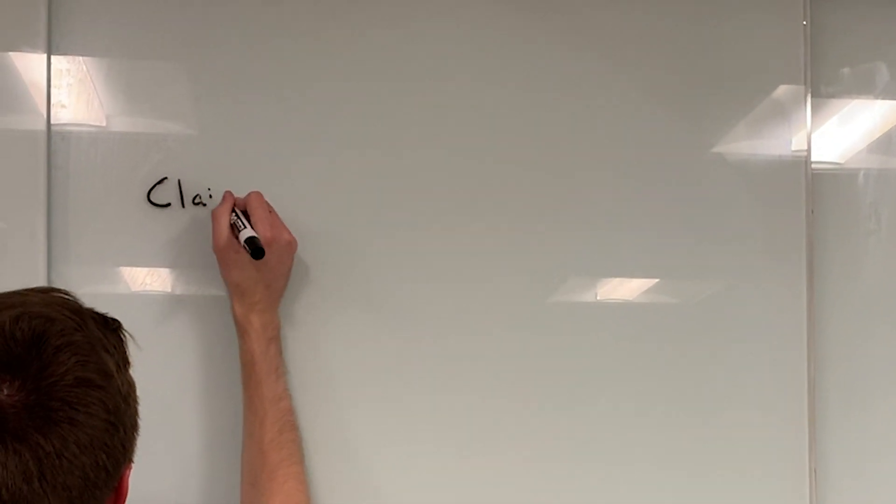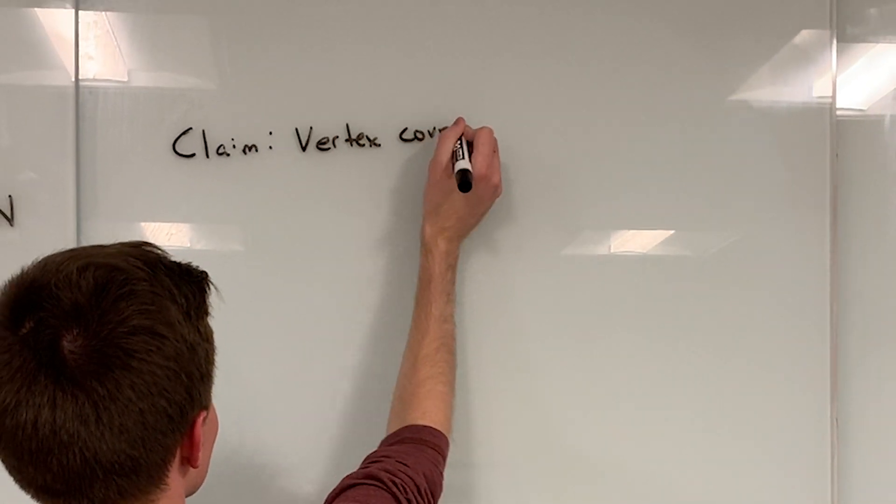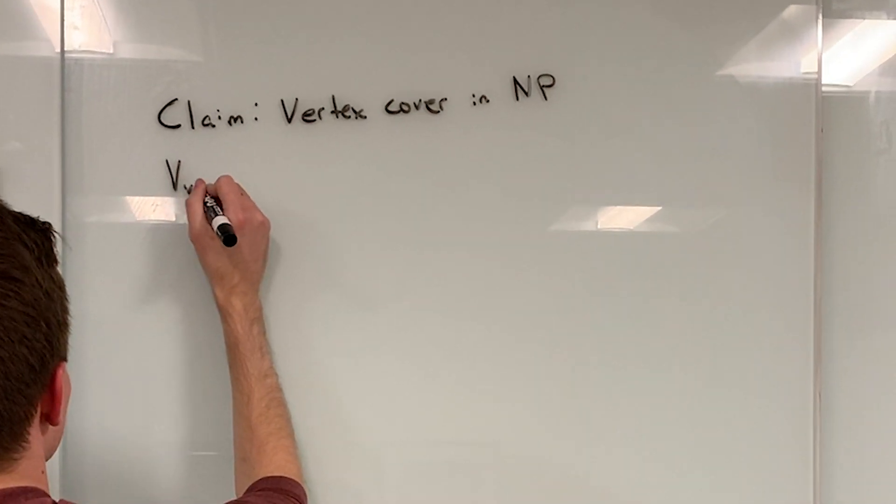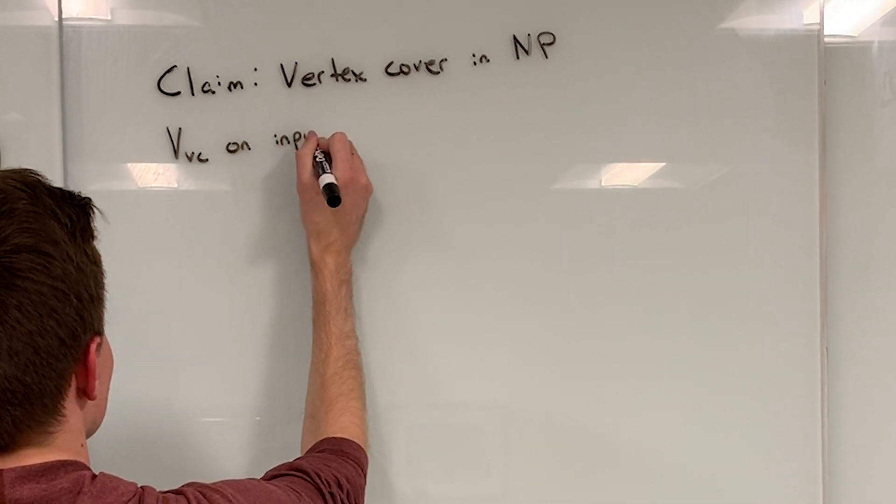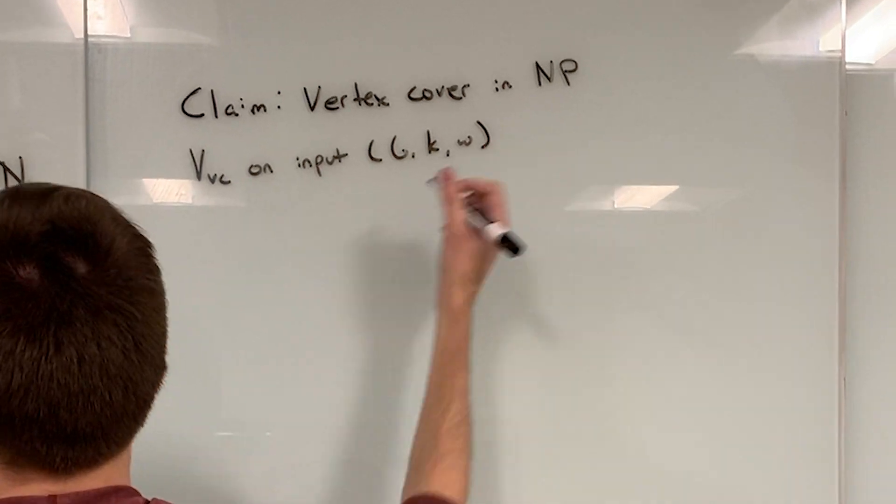In order to prove Vertex Cover is NP-complete, we must prove that Vertex Cover is both in NP as well as NP-hard. I shall now explain how to do the former. We first build a polynomial time deterministic verifier on input G, K, and W.